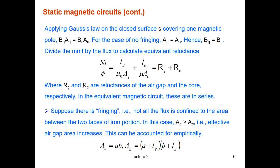If we don't have any fringing, then Ag would be equal to Ac. The effective cross-sectional area for the air gap is equal to the effective cross-sectional area of the core, and therefore we can conclude that Bg equals Bc. And we divide the MMF by the total flux to calculate the total reluctance of the circuit. We can find out that it would be equal to the first part is the reluctance of the air gap, and the second part is the reluctance of the core.